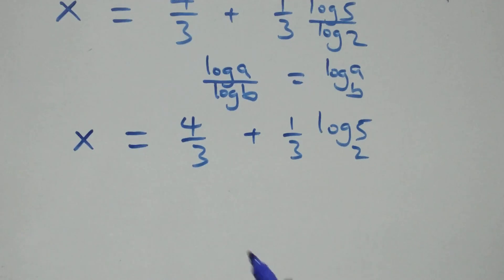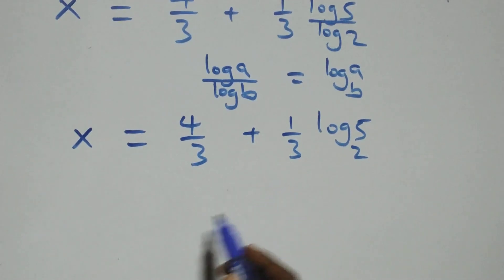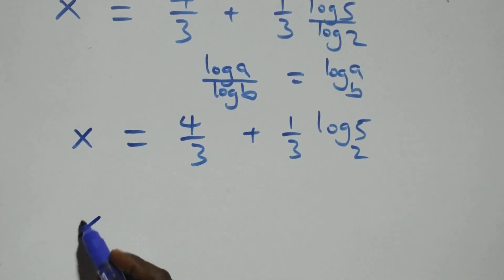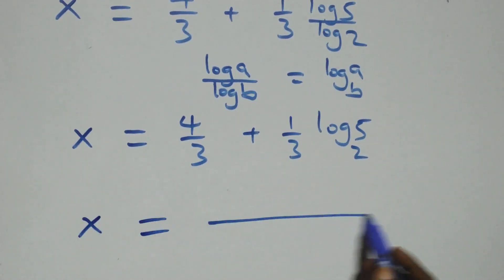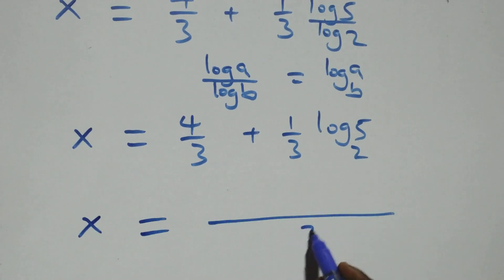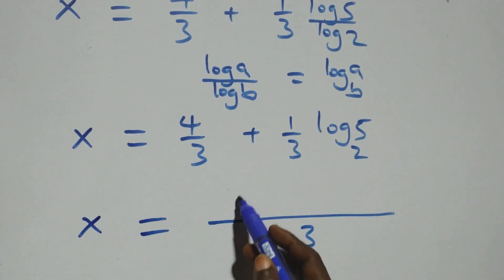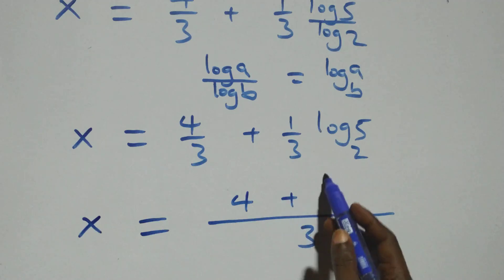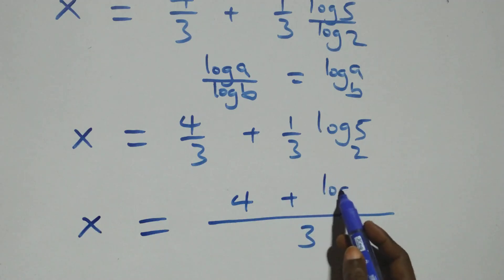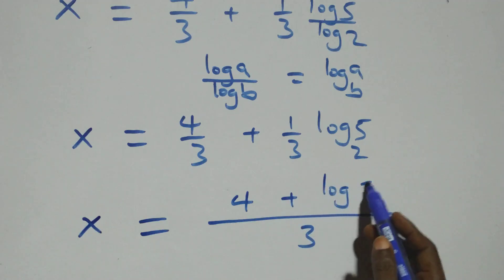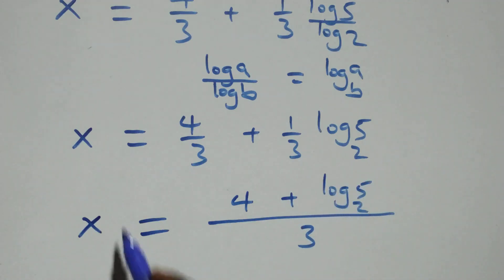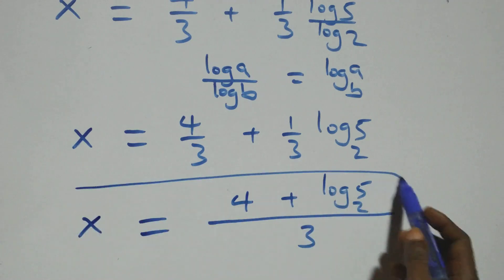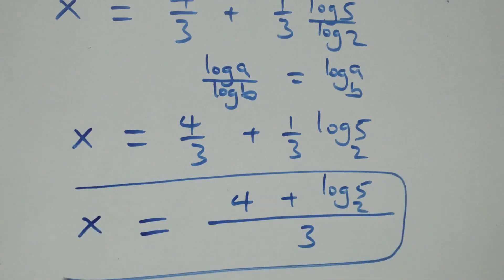We bring this together as one fraction with denominator 3. So X equals to 4 plus log base 2 of 5, all over 3. Therefore the value of X is 4 plus log₂5, all over 3.